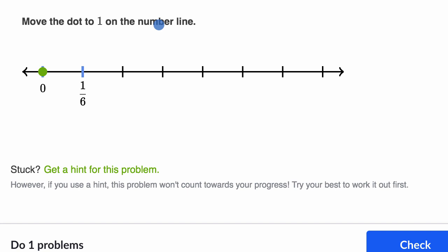All right, in some ways this is a little bit easier because they told us that going from zero to the next cross or hash, whatever you want to call these things, is one sixth. So what is one?